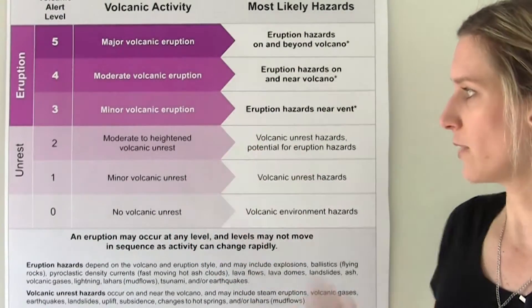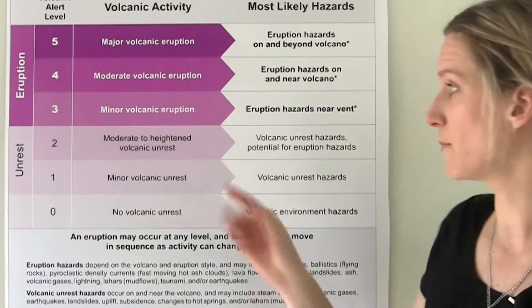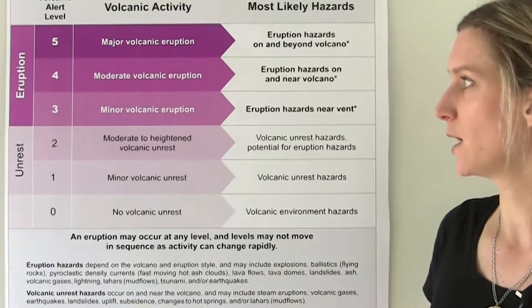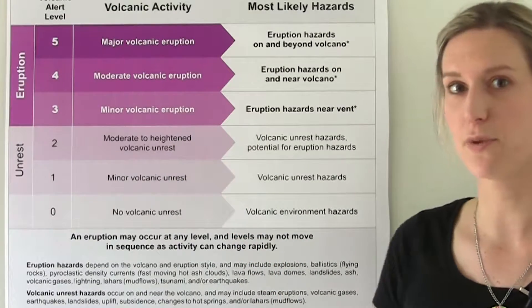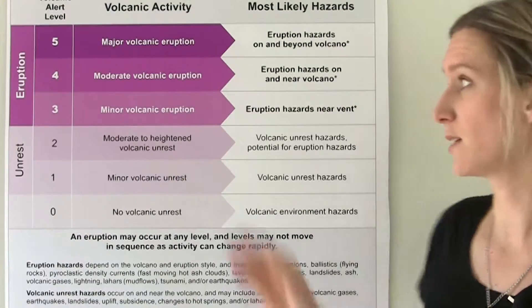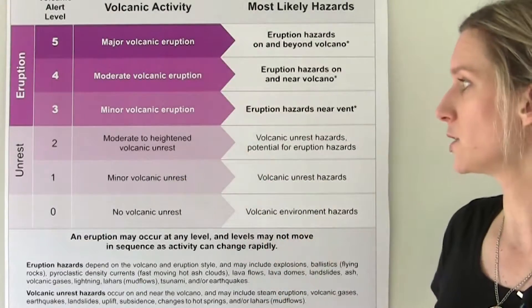There are two levels of unrest: minor volcanic unrest and moderate to heightened volcanic unrest. Then there are three levels for eruptions, which are basically small, medium and large.